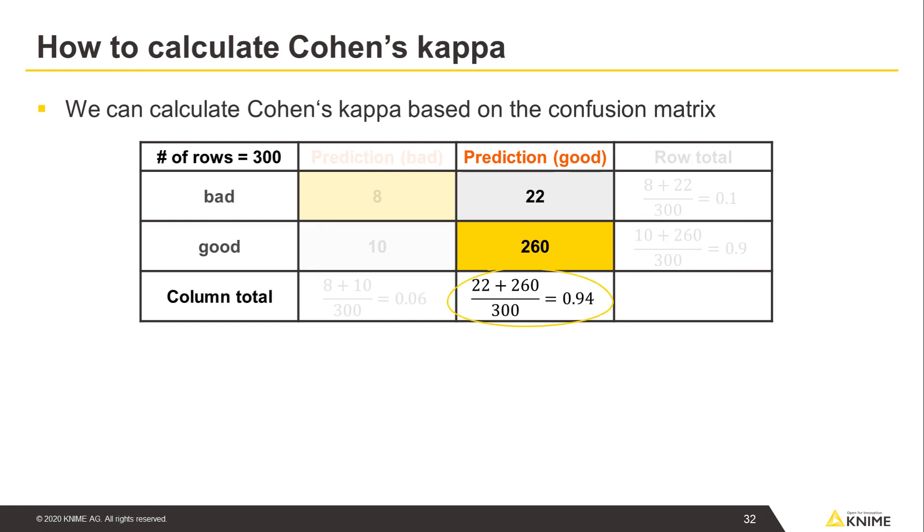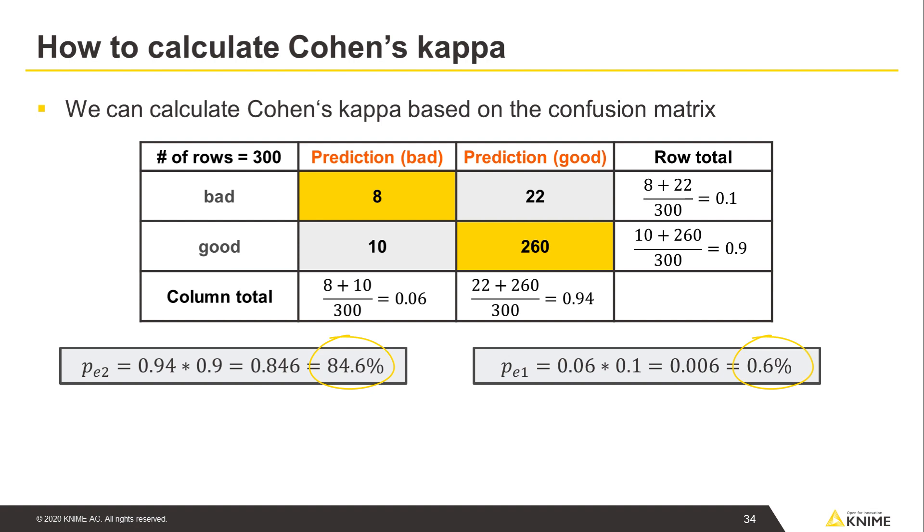Finally, here in the right column total value, we see the predicted probability of the class good, 94%. Again, we multiply these probabilities and see that there is an almost 85% probability of correctly predicting the class good, just by random guess. Notice the big difference between the two classes.